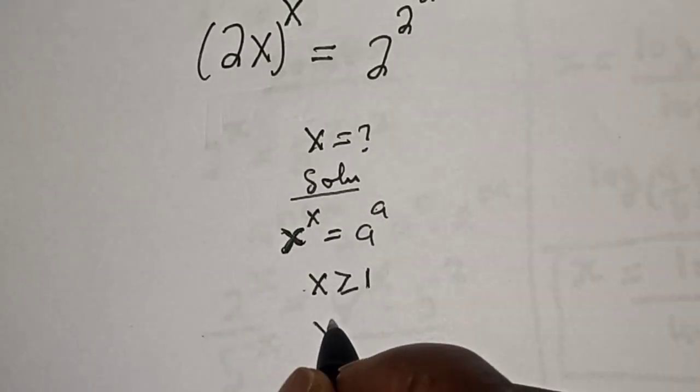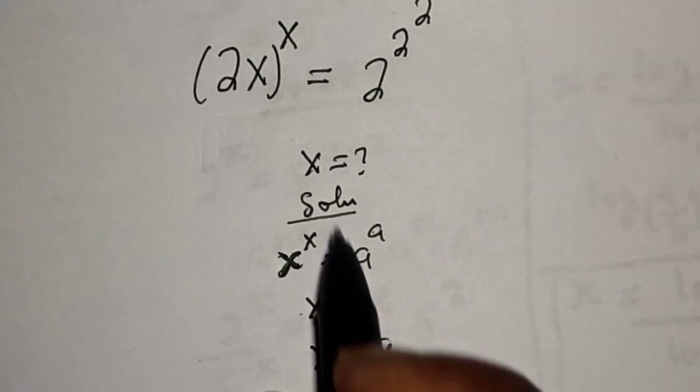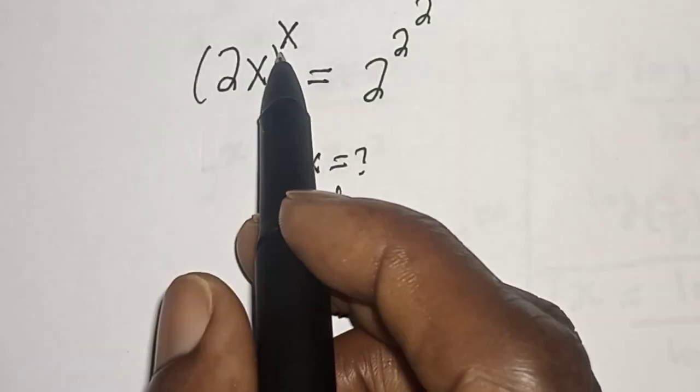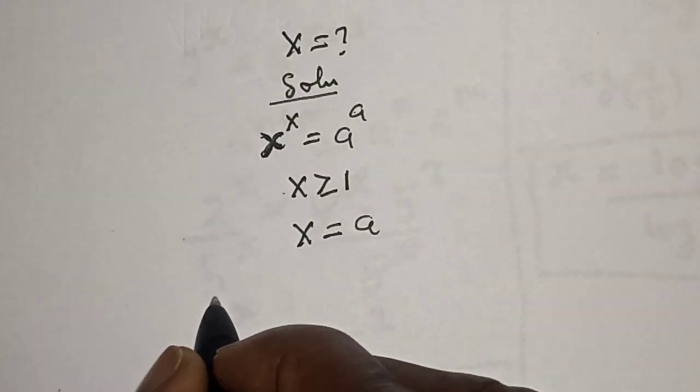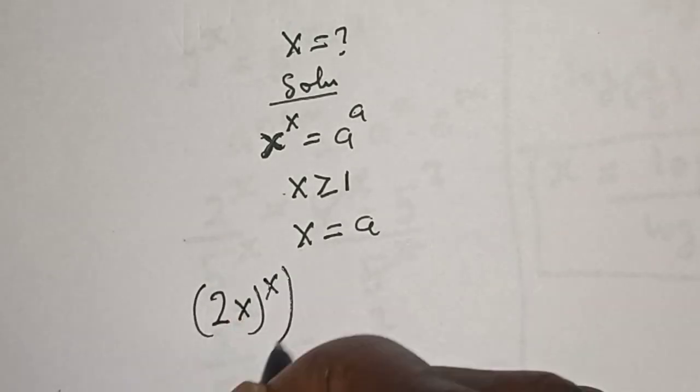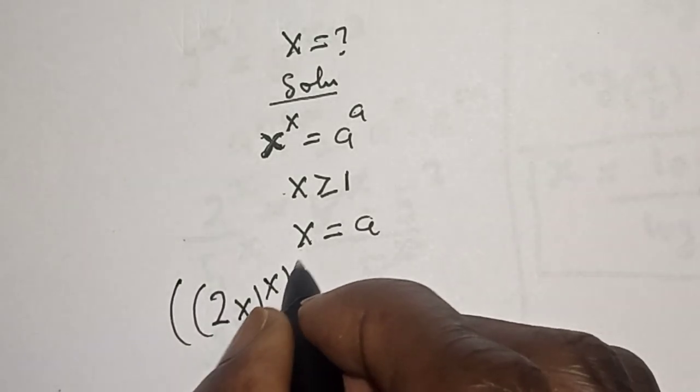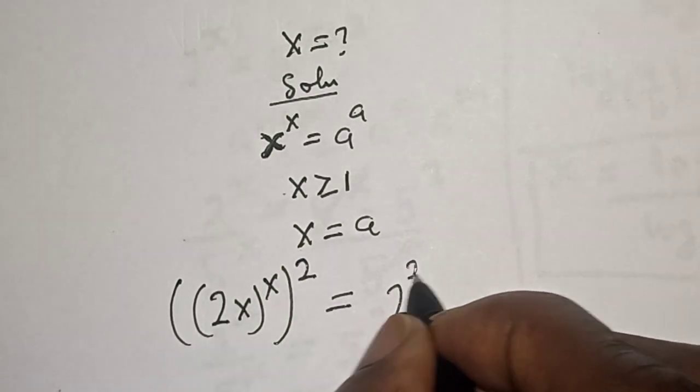From here, let's raise both sides to the power of 2. That is, (2x)^x raised to power 2 is equal to 2 raised to power 2, raised to power 2.